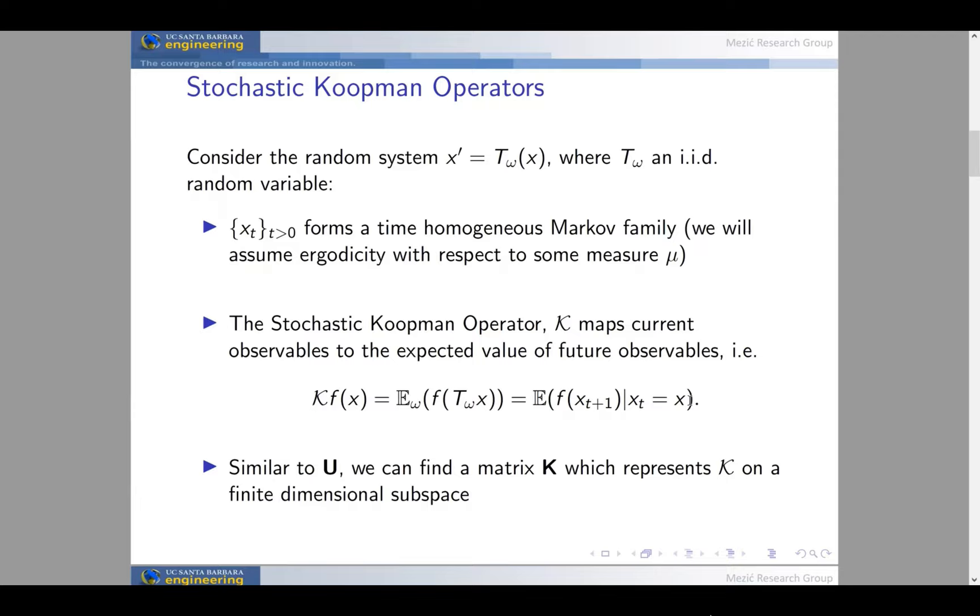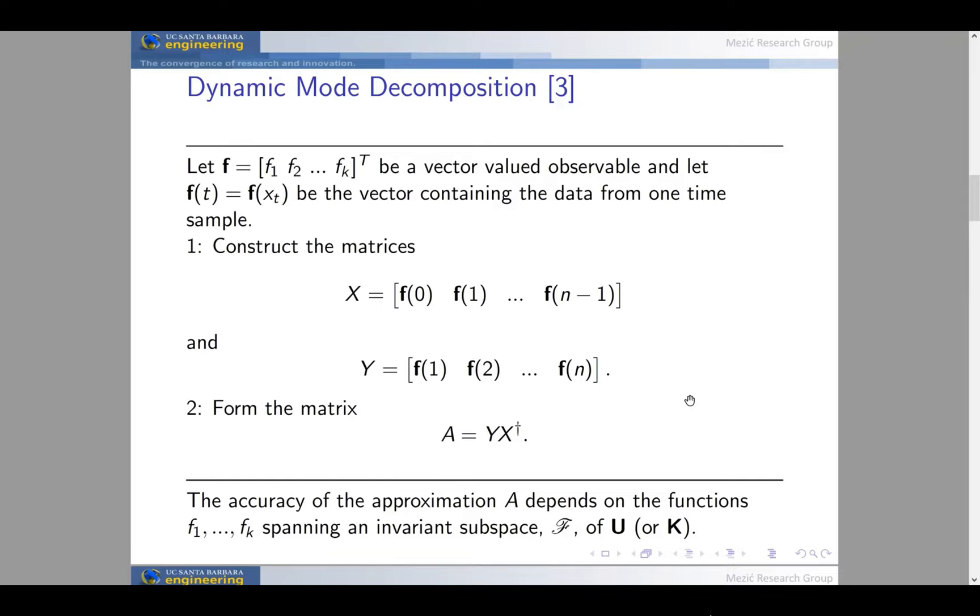For the stochastic Koopman operator, we can't just define an operator to compose it with the one-step map T, since that map is random. Instead, we define the operator to be the expectation over the possible realizations of the dynamics with the future value of the function. That's described here in the equation, Kf equals the expectation of f of T omega. You can also describe that in terms of conditional expectations. Similar to the deterministic Koopman operator, the stochastic Koopman operator is also a linear operator. Given a finite dimensional invariant subspace, we can find a matrix which represents the stochastic Koopman operator.